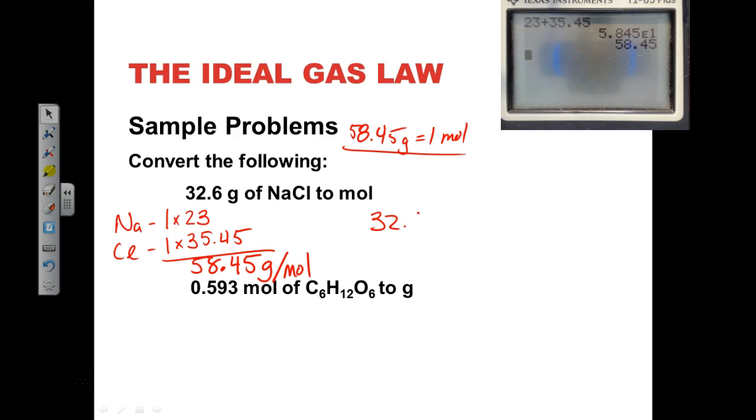And we get 32.6 grams, and we set up an x-line. That's not my saying. That's my colleague next door. I stole it from her, and we'll use it for the rest of my life. And then we do grams, moles. We want to get rid of grams. Now we have moles, and so for every one mole, the mass is 58.45 grams. And so now we do 32.6 divided by 58.45, and we get that that is 0.558 moles.